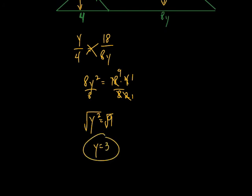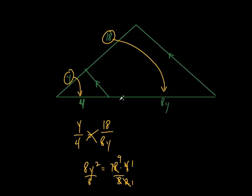They asked for the value of Y, and that's 3. But again, what else could they ask for? They could ask for segment NC: plug in 8 times 3 equals 24. Or they could ask for AC: 24 plus 4 equals 28. They could ask for all kinds of different things — make sure you read the problem and solve for what they ask.